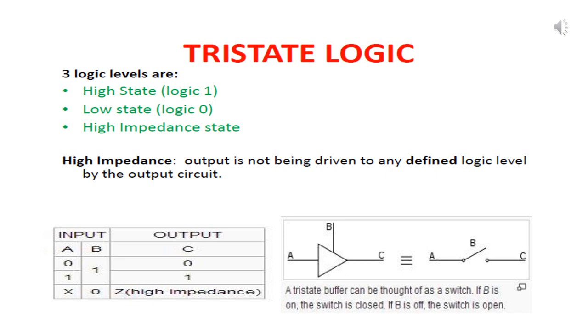When a control input B is equal to 0, the tri-state buffer acts as an open switch. That means whatever given at the input A is not transferred to the output C. This state is called as a high impedance state.